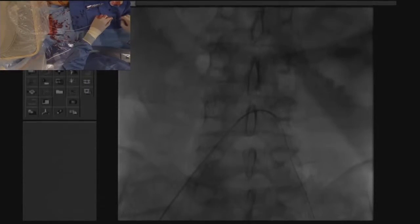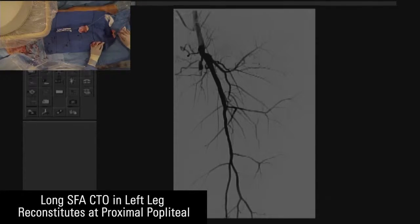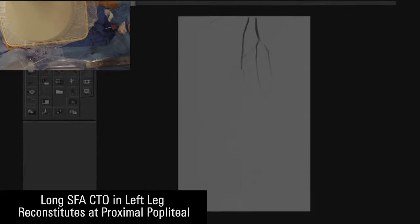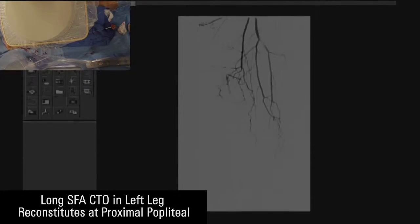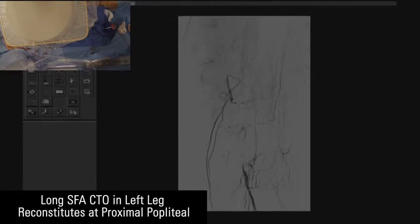In this case, we're using a rim catheter with a glide advantage wire and doing selective angiography of the left lower extremity. The CTO, as you see, is just after the takeoff of the superficial femoral artery. There is an island of reconstitution in the middle of the vessel and then reconstitution beyond the adductor's canal within the proximal popliteal artery.